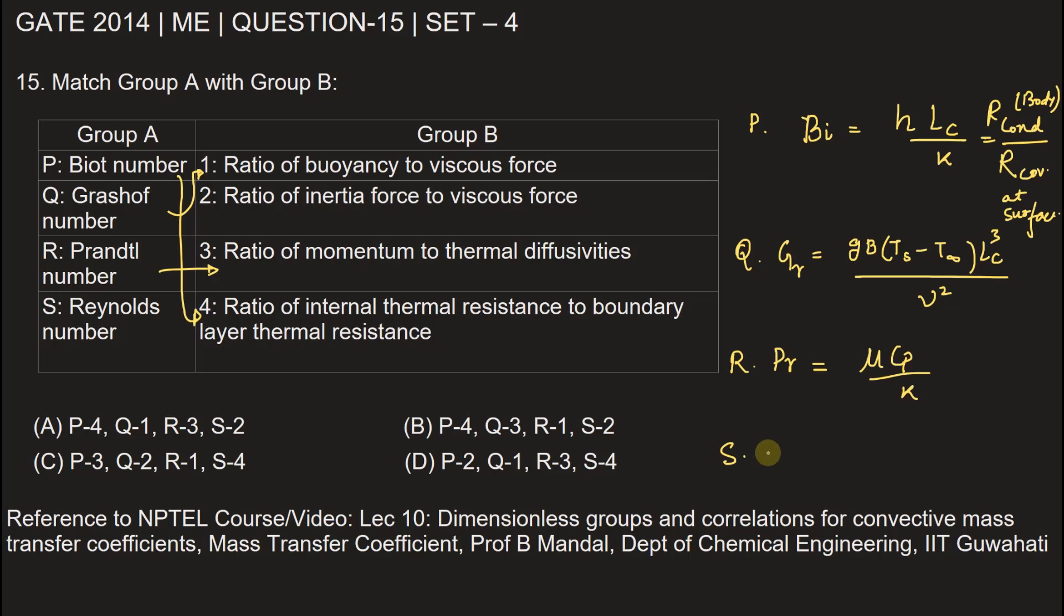And the fourth one, Reynolds number, is the ratio of inertial force to viscous force, which is rho VL or D in case of pipe, upon mu. Therefore, we can match S with 2. From here we can say option A is the correct choice.